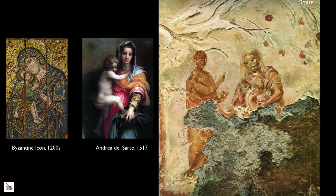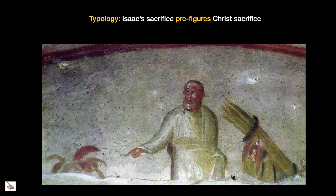Here we find several early scenes of Christian iconography. Artists were interested in glorifying the spiritual rather than the human aspect. The woman you see here with the baby is perhaps the earliest representation of the Madonna, or Virgin Mary and Child - a subject that was very popular in Western art history. Typology: Isaac's sacrifice prefigures Christ's sacrifice. Abraham's willingness to sacrifice his son foretold God's willingness to sacrifice his son, Christ, for the salvation of mankind.